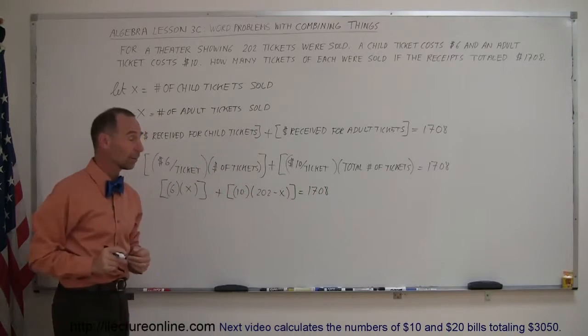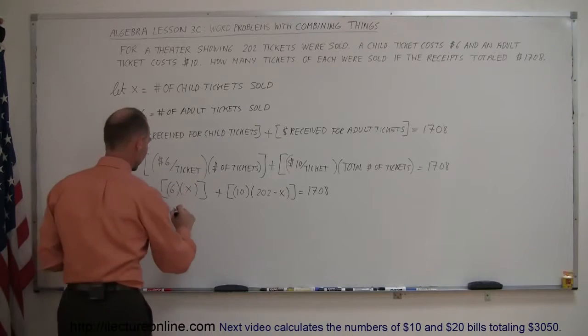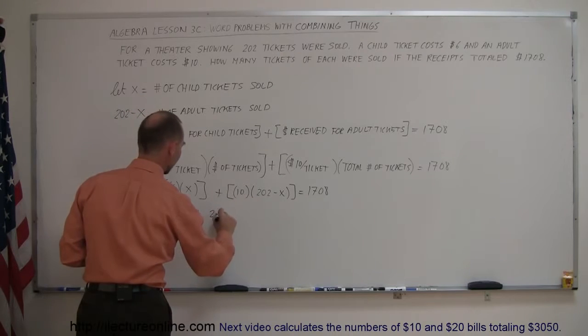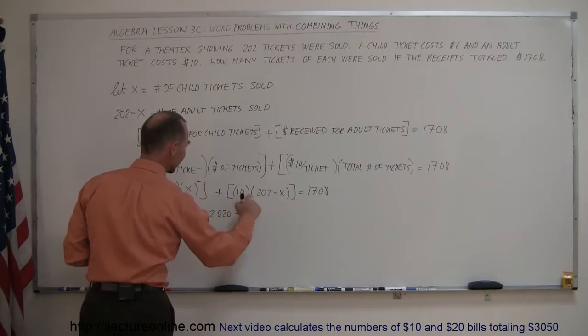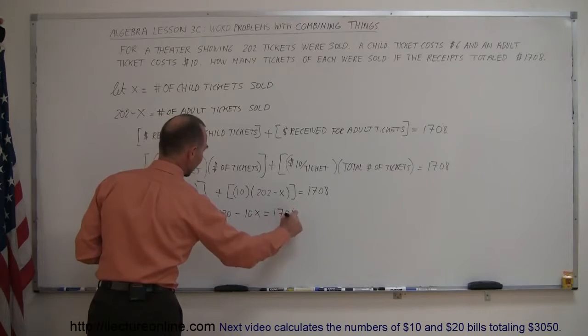And now we're ready to solve this problem. Now we're ready to solve this equation. So, simplifying things, this is 6x plus 10 times 202 is 2020 minus 10 times x is minus 10x, and that equals 1,708.